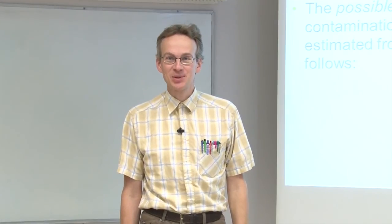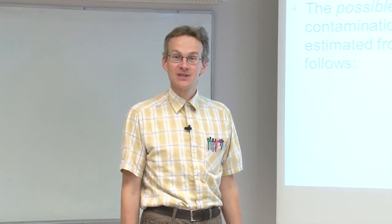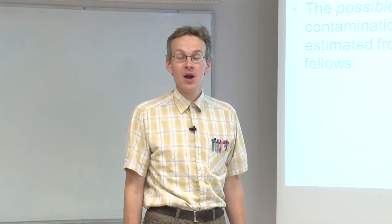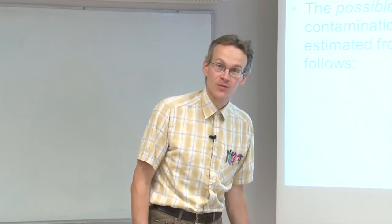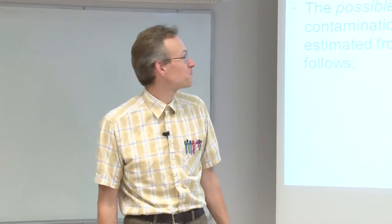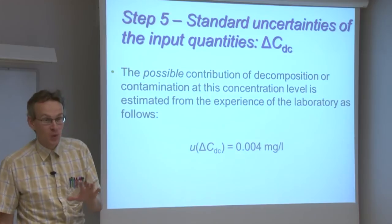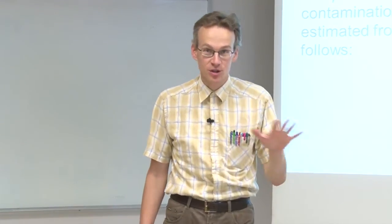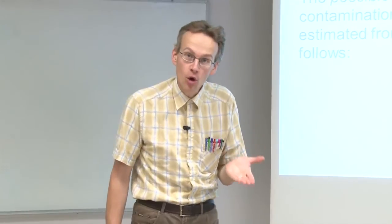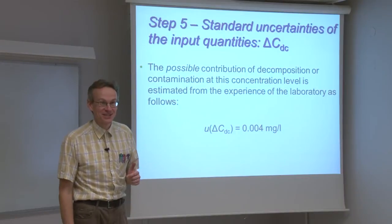The next input quantity is the delta c dc. This input quantity is meant for taking into account possible decomposition of the analyte or possible contamination of the sample or the solution. I stress the word possible, because it can well be that there is neither contamination nor decomposition, but since we do not exactly know, we have to take this possible effect into account as an uncertainty.